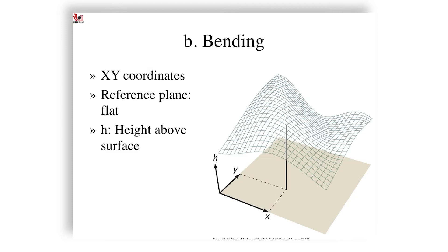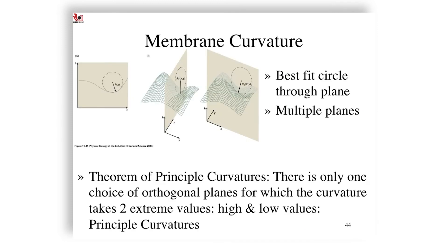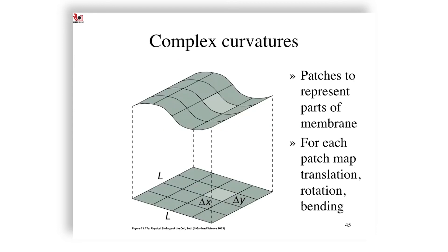Bending, on the other hand, is a little bit complex because if you have x-y coordinates and a reference plane, then you can measure it in terms of a height above a surface. If you have a complex bend, a curvature, then you need to take multiple planes and find the curvatures along each of those planes. The best-fit circle through that plane gives you the curvature in that plane. There is a theorem of principle curvatures which tells you that there is only one choice of orthogonal planes for which the curvature takes two extreme values, the highest and the lowest, and these are then referred to as the principle curvatures. Using this and the idea that you can break the membrane into patches, you can actually find the deformation of the membrane. In such a case, the energy of bending is half K by R squared, R being the radius of curvature and K being the bending modulus.